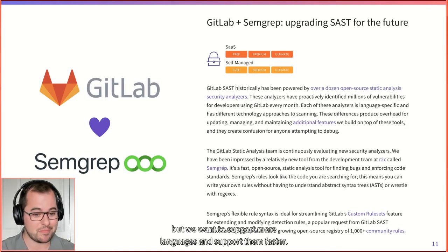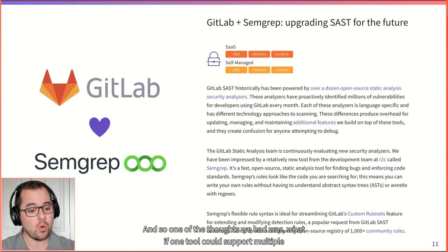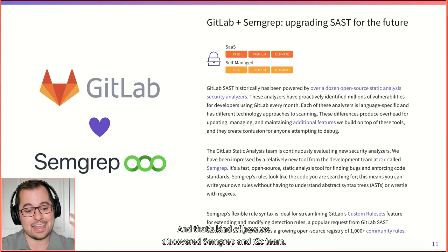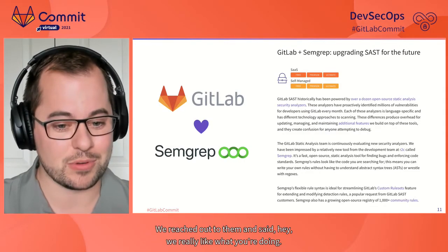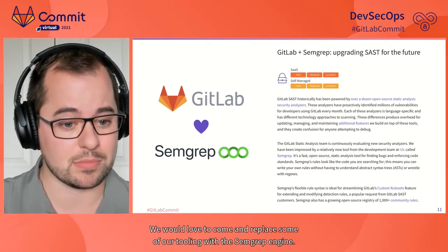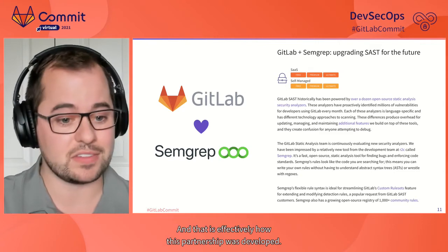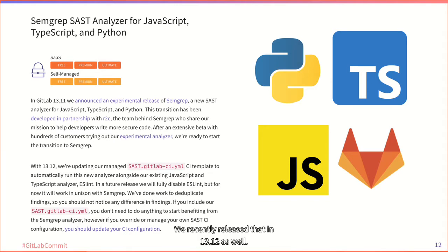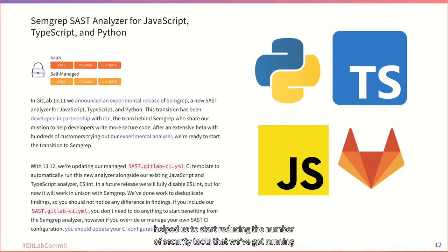As I mentioned, GitLab SAST today is about 15 different tools. Managing, updating, and keeping all of those tools secure is a large burden. Adding features like custom rule sets has to be implemented 15 times across all the analyzers. We want to support more languages and support them faster. The thought was: what if one tool could support multiple languages with a really great API and development team behind it? That's how we discovered Semgrep and the R2C team. In 13.11, we released a beta version of Semgrep powering our JavaScript, TypeScript, and Python analyzer, and in 13.12 as well.